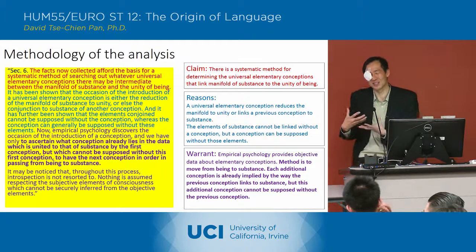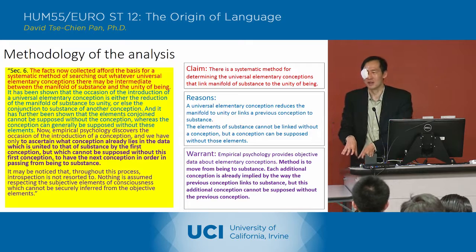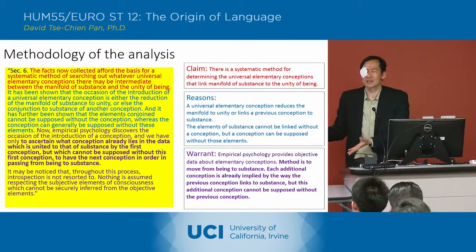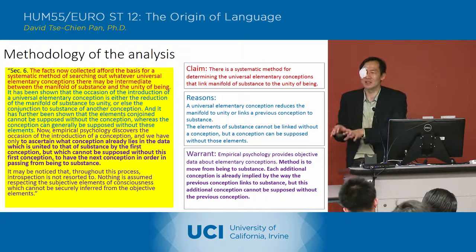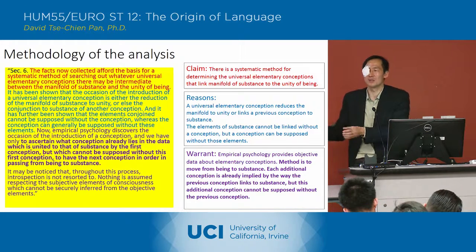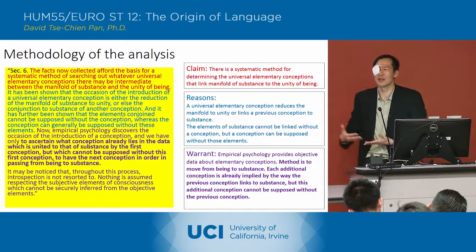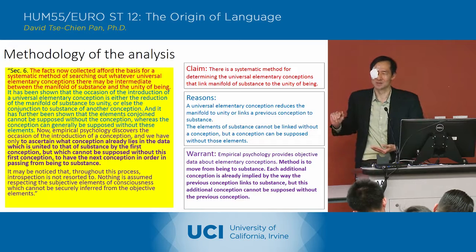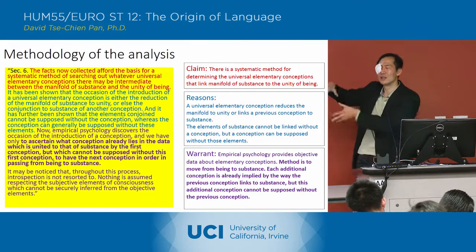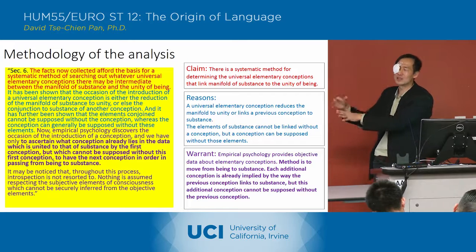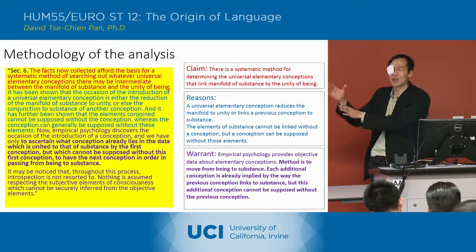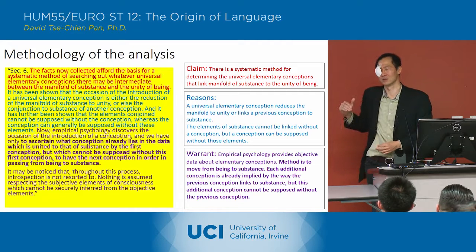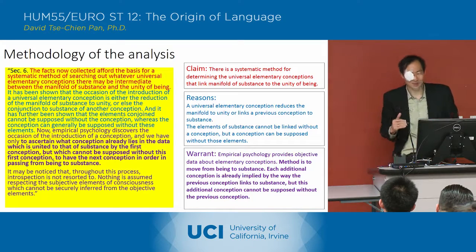What he's doing is trying to say: if we just start with being and analyze how being works, we're going to get the next conception, because even in the concept of being, there's another conception embedded that's necessary for being to function — and that's going to be the next conception in the movement toward substance. All we have to do is construct this ladder, looking at each conception, seeing what each conception implies, and that's how we get the next conception in this ladder up toward substance. That's his method.